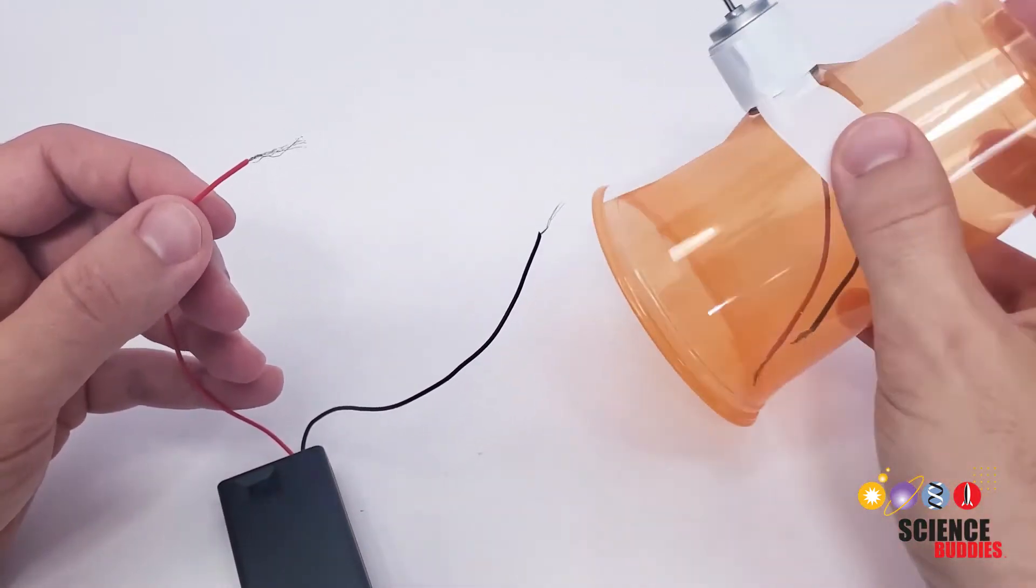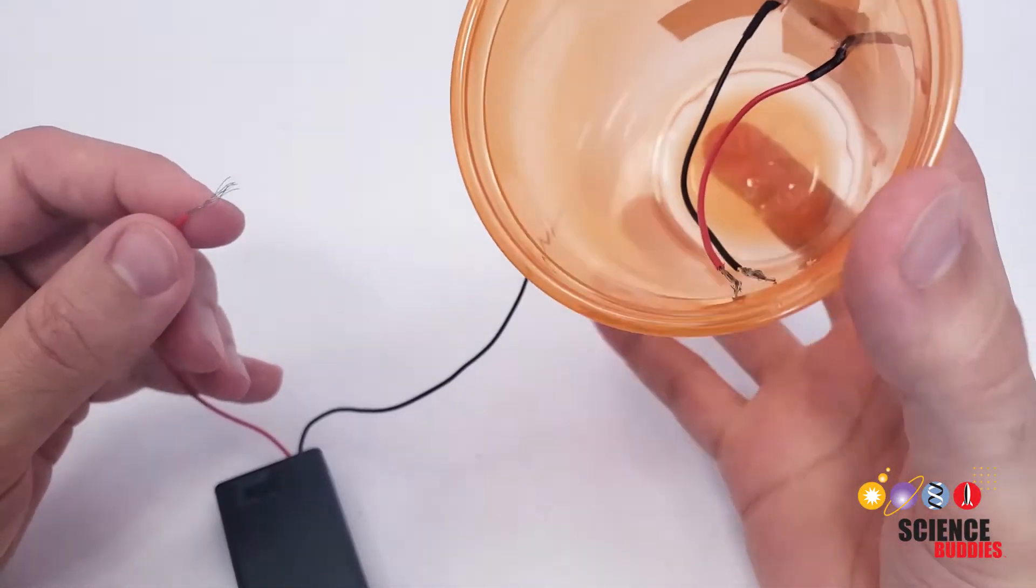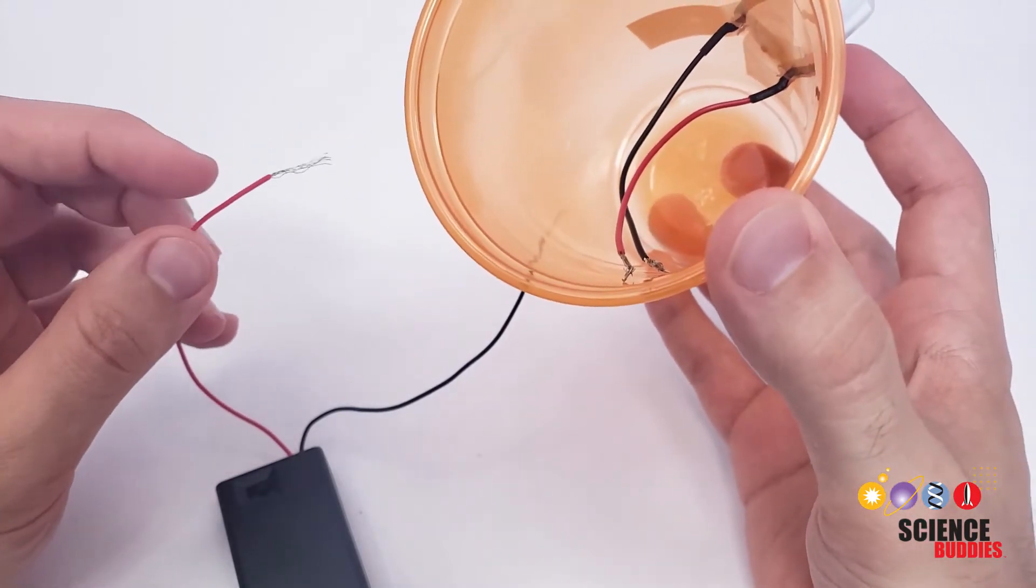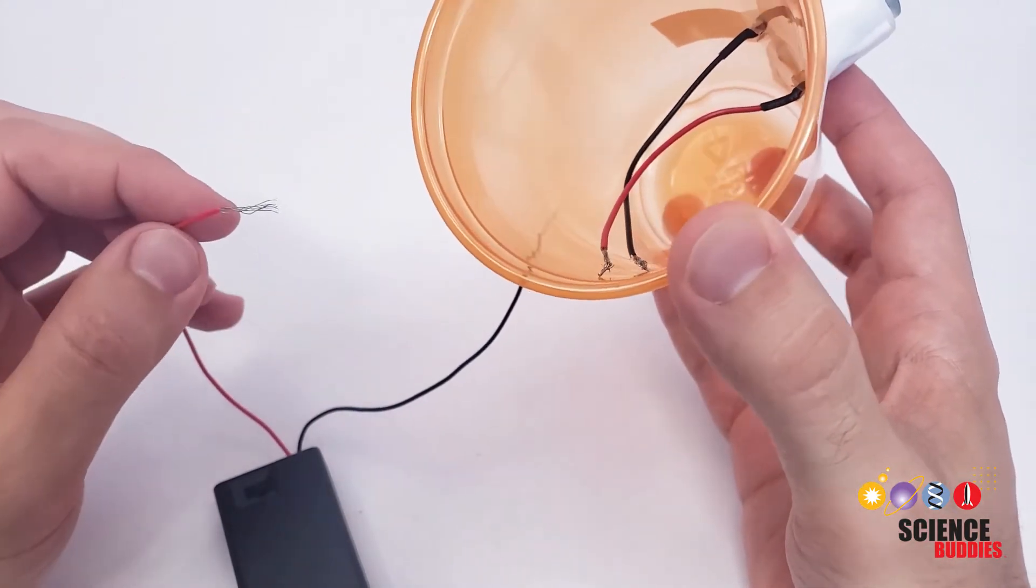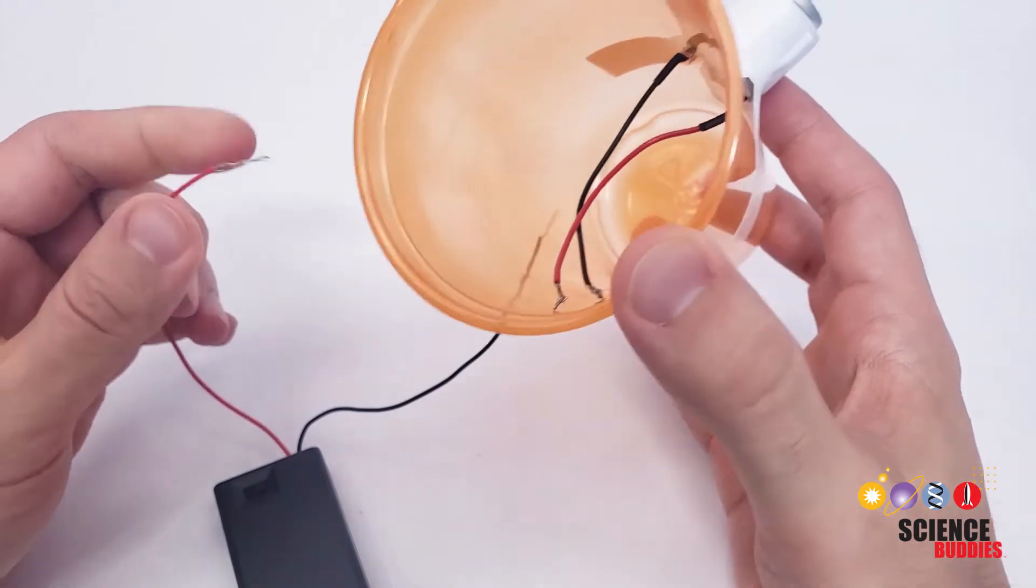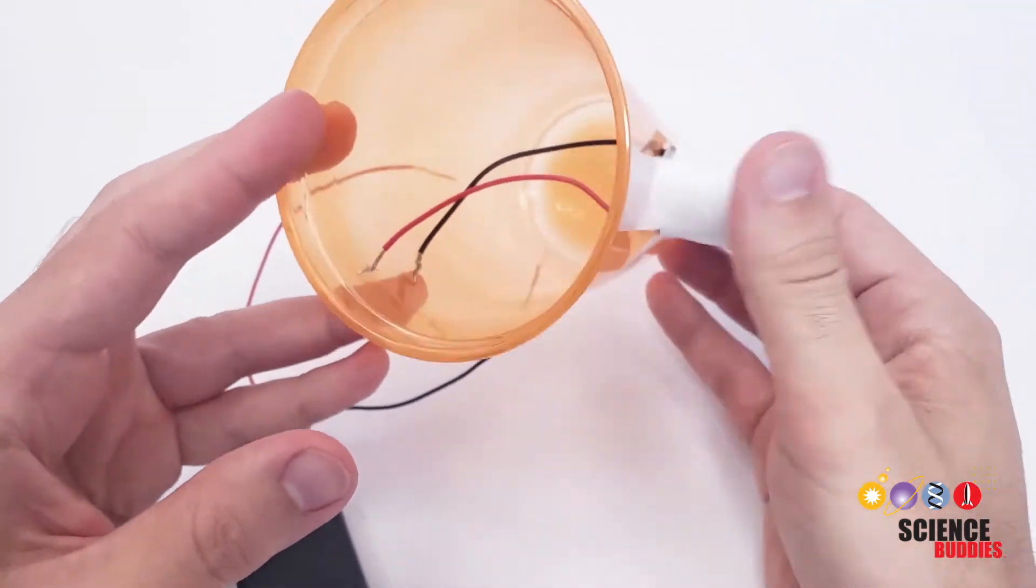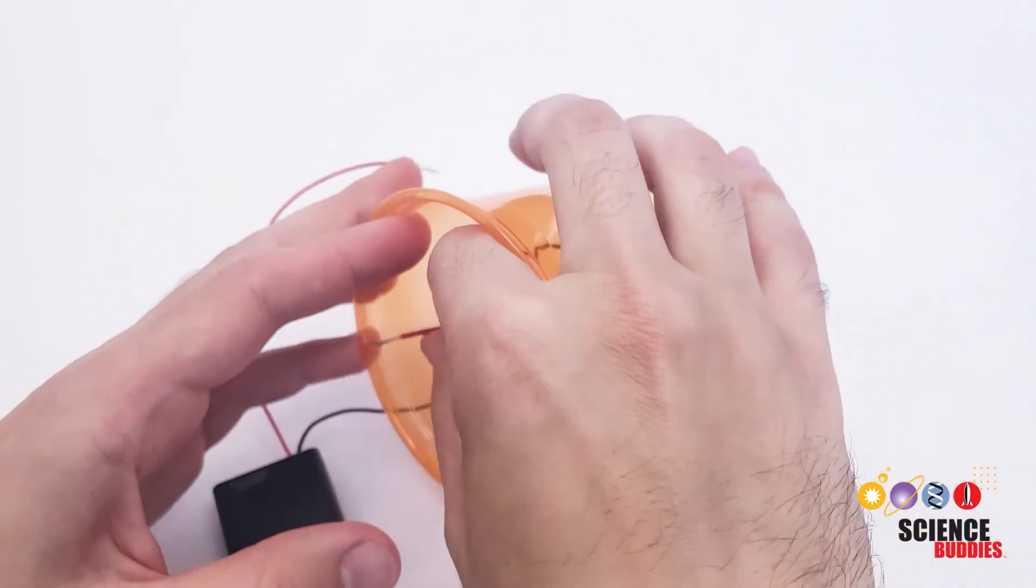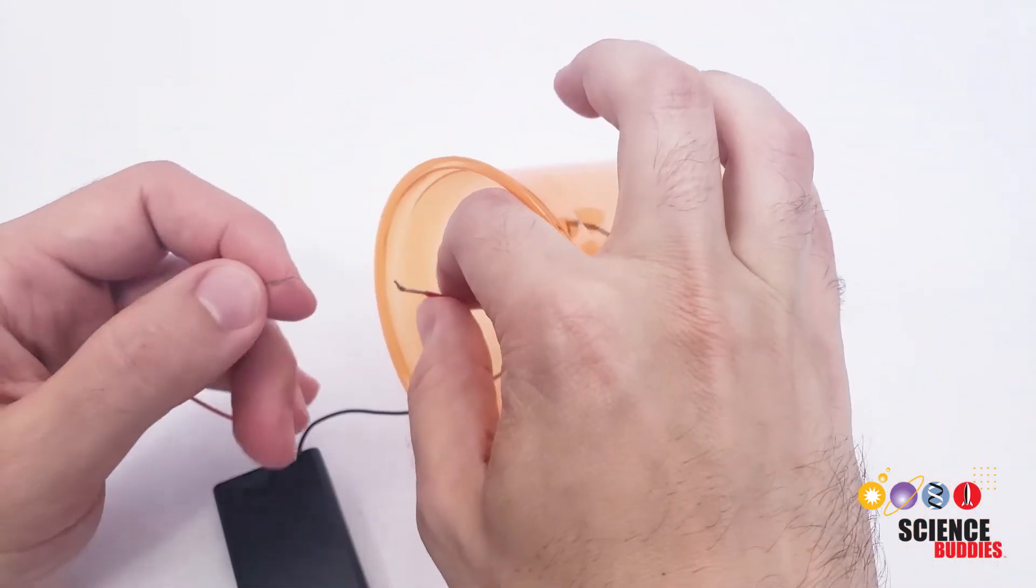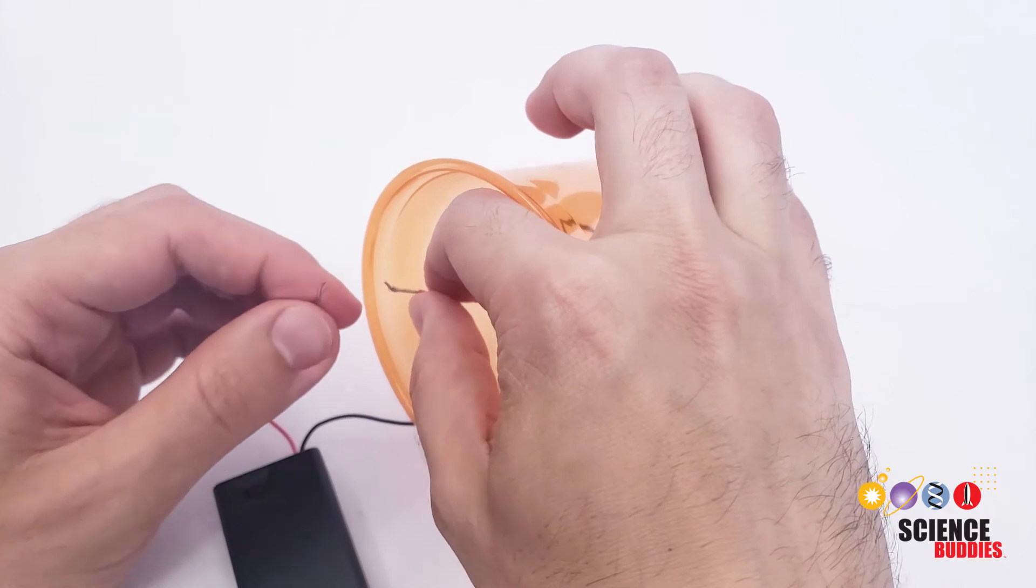So what we're going to do now is flip the cup over and connect these wires by twisting them together. We are going to go red to red and black to black. Now, in this case, it doesn't actually matter if we connect them backwards. If we reverse the wires, that would just make the motor spin in the other direction, but it's still good to get in that habit if you're learning to work with circuits of connecting positive to positive and negative to negative.